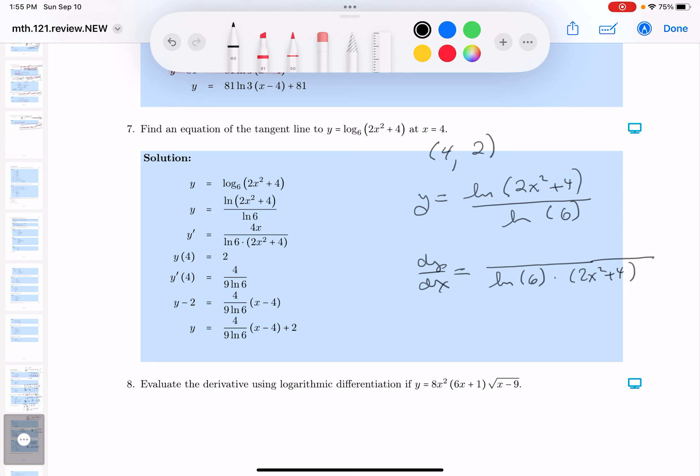Pretty simple. What goes on top is the derivative of the argument, which is, you know, 4x. I want dy dx at x equals 4. And this is the slope of the tangent line. So what do you get there? 16 on top. You get natural log of 6.